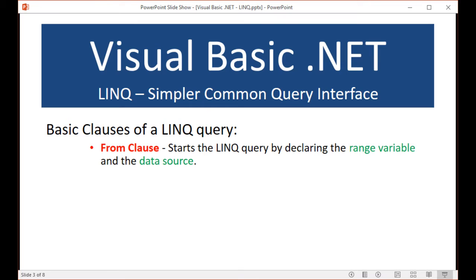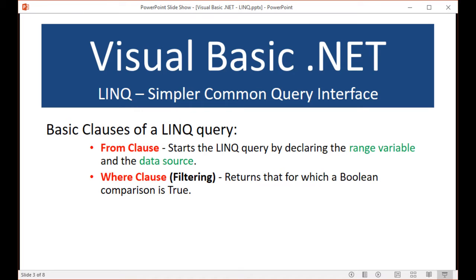There is the from clause, and this starts the LINQ query by declaring what's called a range variable and also the data source. So I might say an item in my array, for example — that would be the from clause. Look for the range variable and the data source. Once that's declared, the IntelliSense will start to kick in and make your coding much easier. Then you can have a where clause in your series of clauses to create your LINQ query. This allows us to filter the data that we want to retrieve back, and it will look for a comparison and return those values where the comparison ends up being true.